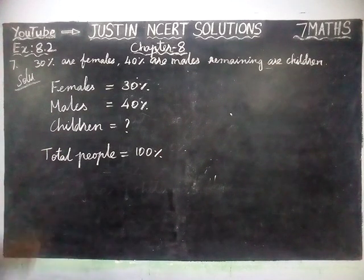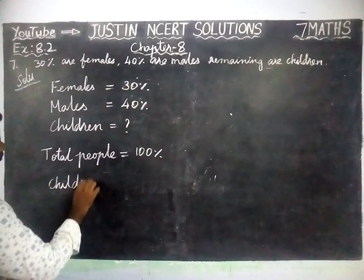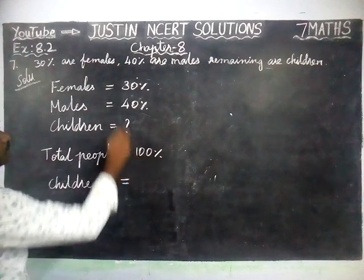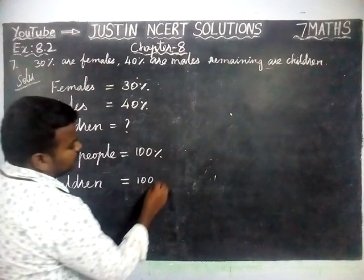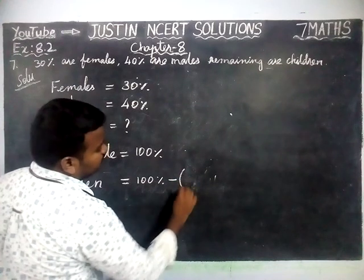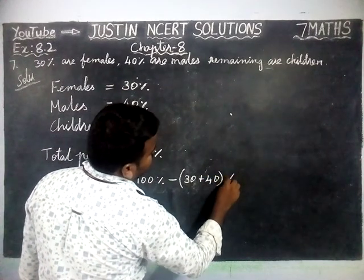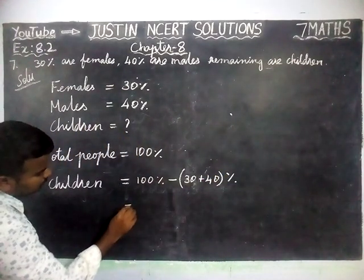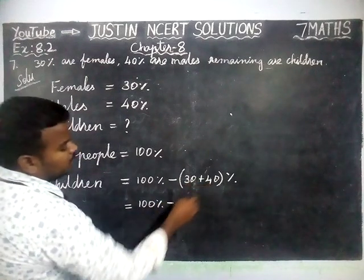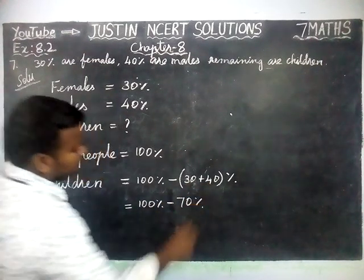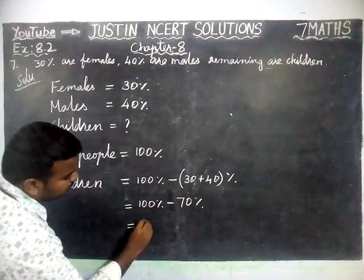Now we are going to find the percentage of children. Children is equal to total minus female minus male. So, 100% minus (30 + 40)% equals 100% minus 70%, which is equal to 30%.